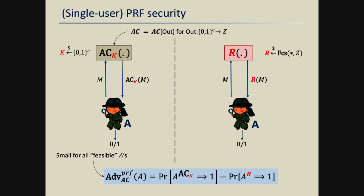Indistinguishability is measured by requiring that the PRF advantage is small for all feasible adversaries or distinguishers A, where the advantage is defined by the difference of the probabilities that the adversary outputs one on the left and the probability that it outputs one on the right.